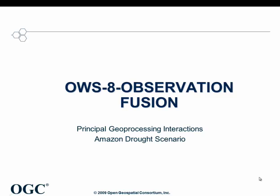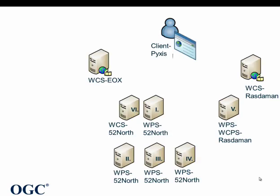This video shows the principal geoprocessing interactions for the Amazon Drought scenario. The architecture is composed of a client provided by Pixis, a WCS provided by EOX serving ESA data, a WCS provided by Rastaman serving NASA data, and a couple of WPS services calculating drought areas and a WPS wrapping a WCPS provided by Rastaman calculating precipitation data to validate the drought areas.